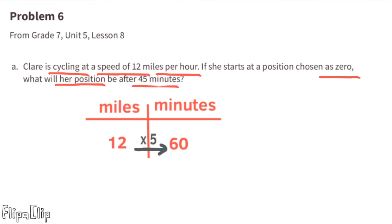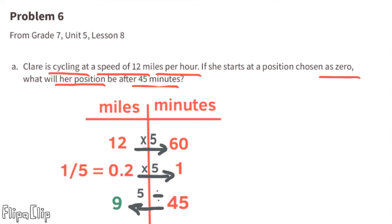The number of miles times 5 gives the number of minutes, or minutes divided by 5 gives miles. For example, 1 minute divided by 5 equals one-fifth of a mile, or 0.2 miles. For 45 minutes: 45 divided by 5 equals 9. So it would take Claire 45 minutes to travel 9 miles.